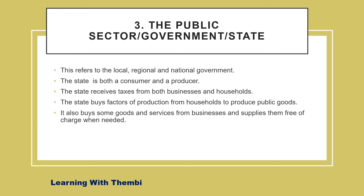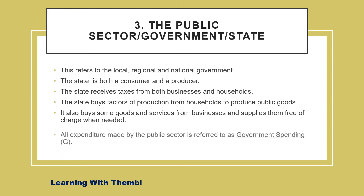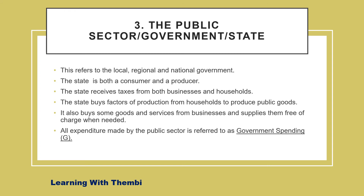The government also buys some goods and services from businesses and supplies them free of charge when needed. All expenditure made by the public sector is referred to as government spending and is represented by the capital letter G in the accounting aggregates.